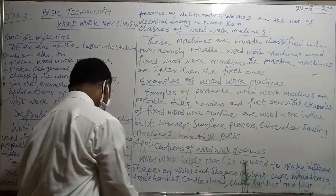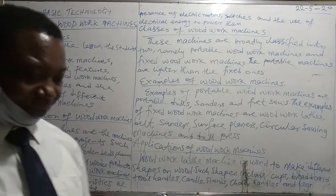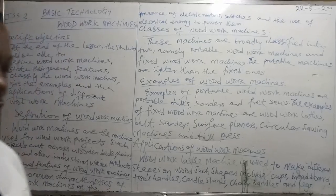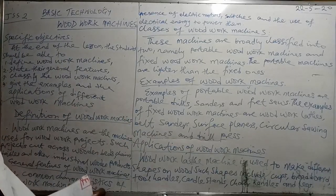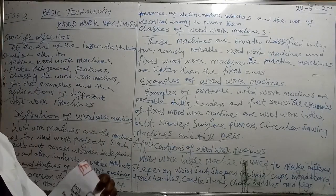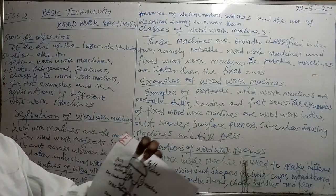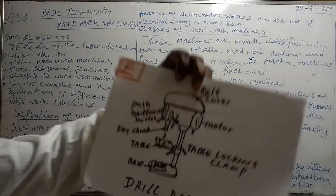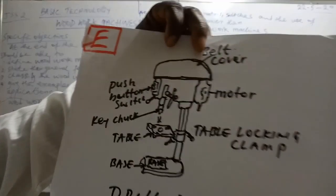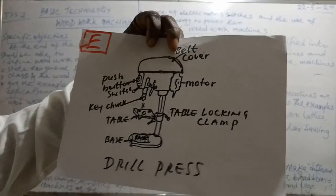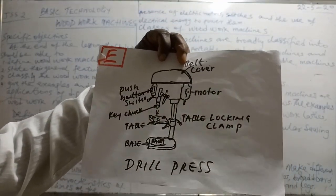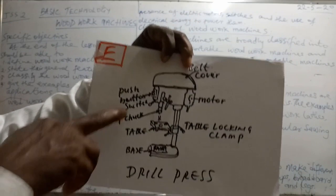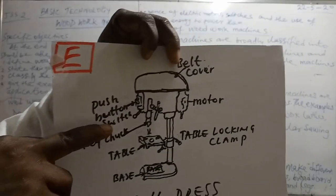We have the last example in my hand to show you the common characteristics of all the woodwork machines. We have the drill press. This drill press has the motor, as I already explained. And there is also a switch at the particular point.